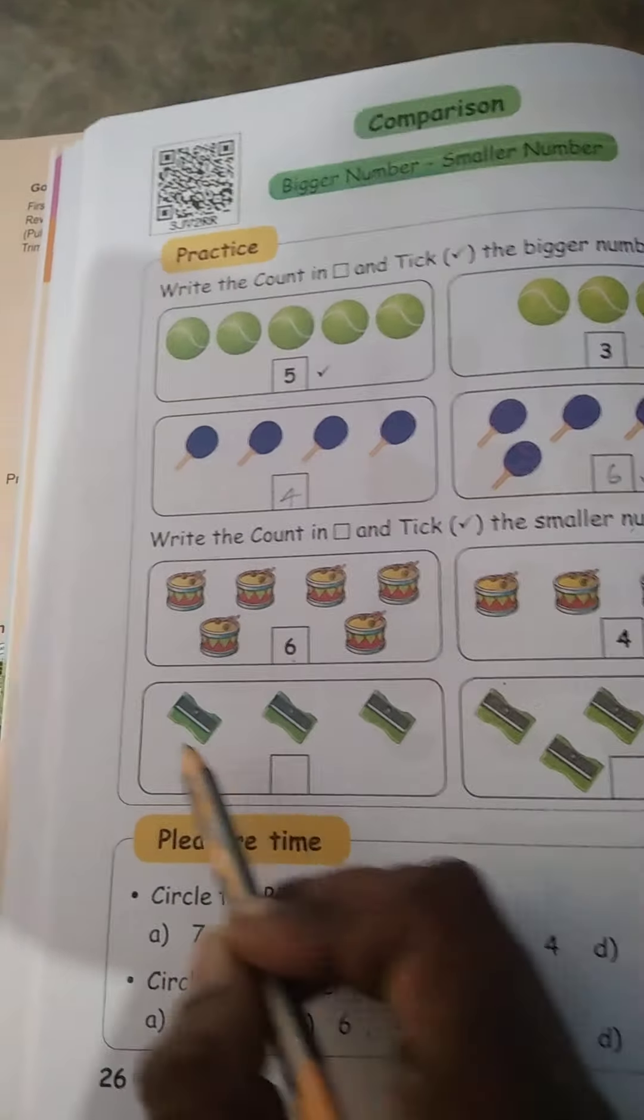9 or 4? Yes, 9 is big. Circle 9. Next, 1, 3. Which is big? 3 is big. Circle 3. Next, circle the smaller number. This is bigger number, this is smaller number. Circle the smaller number.